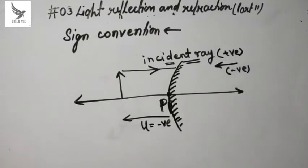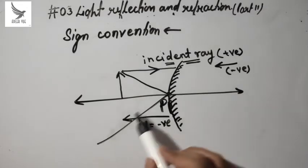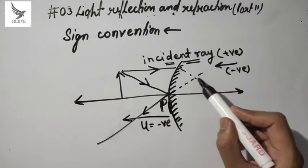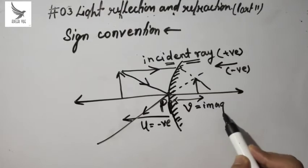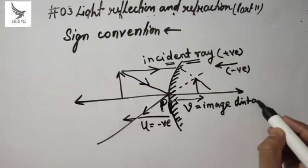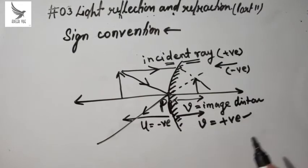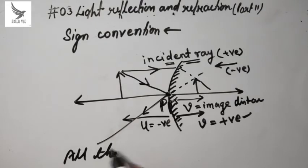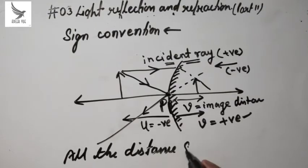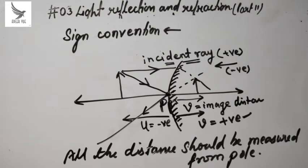All distances along the direction of the incident ray are taken as positive, and opposite to the incident ray are taken as negative. For example, if we form the image of this object in a convex mirror, the image forms behind the mirror. We extend the rays behind the mirror — the image distance V is measured from the pole. Since it is on the same side as the incident ray direction, it is positive. All distances must be measured from the pole of the mirror.